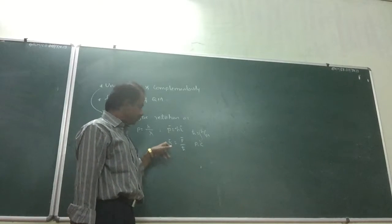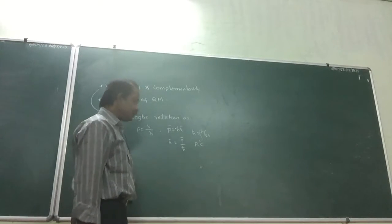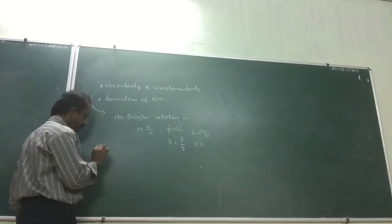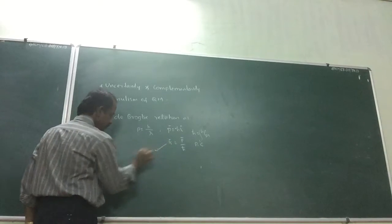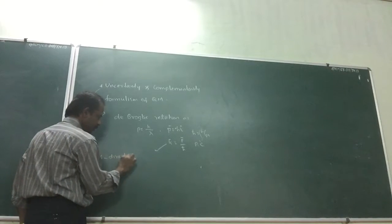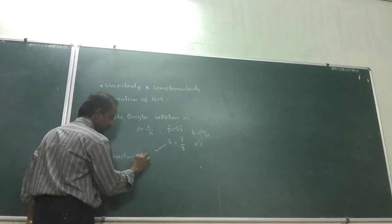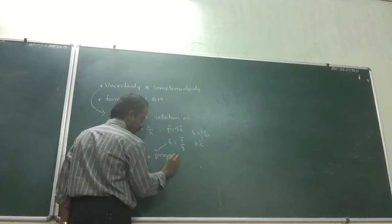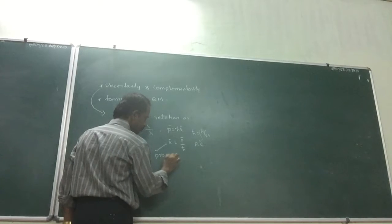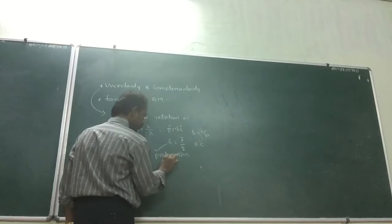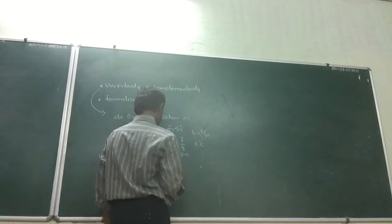And what is K? K is the wave vector, the direction and magnitude of the probability wave. K is the wave number of the probability structure.